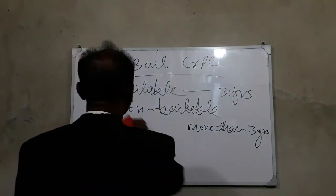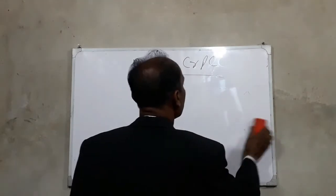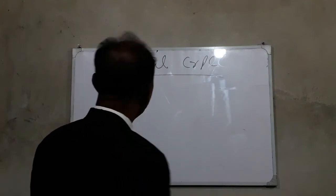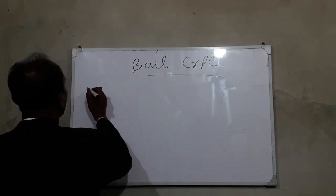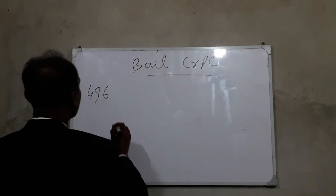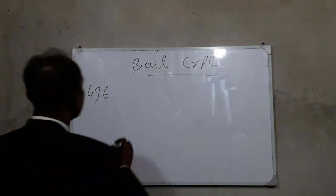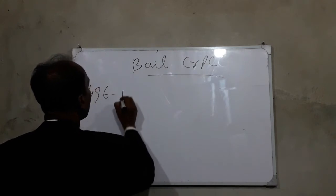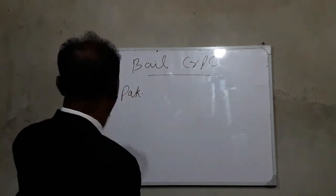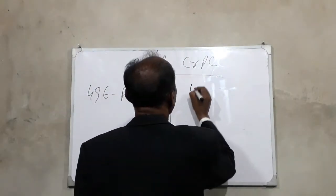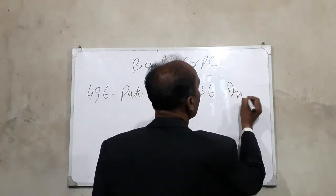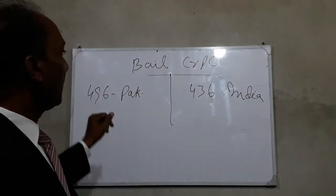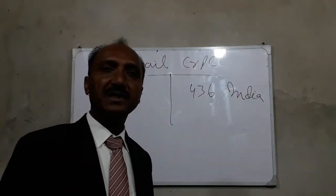Now we come to the different sections of CrPC under which bail in bailable offenses and non-bailable offenses is granted. Under Section 496 CrPC of Pakistan and under Section 436 CrPC of India, bail in bailable offenses is granted.